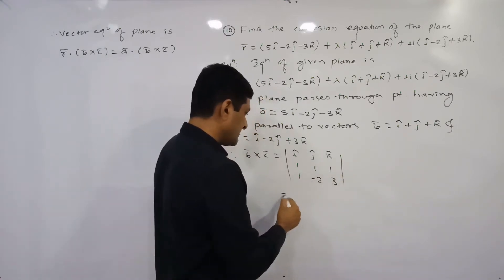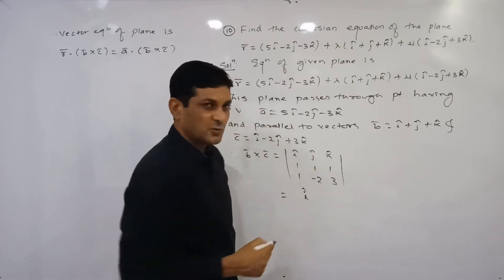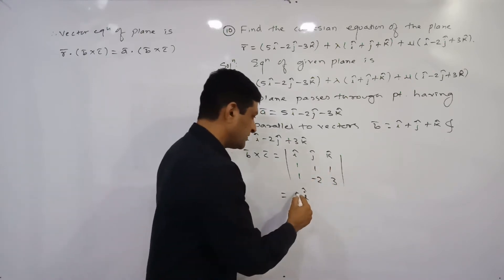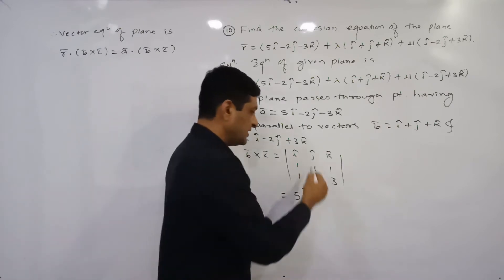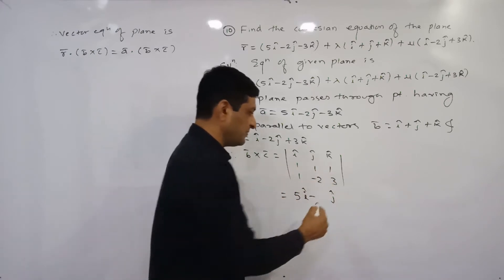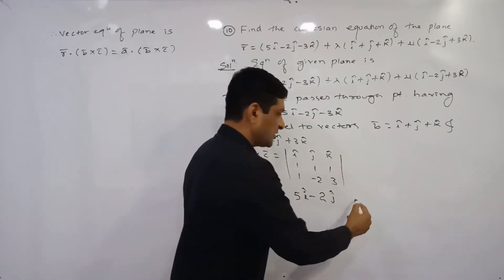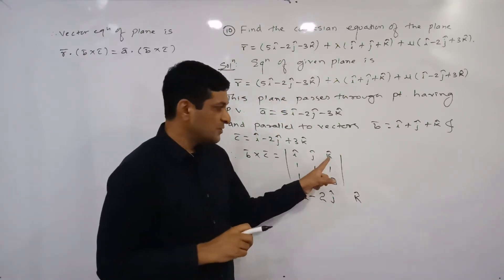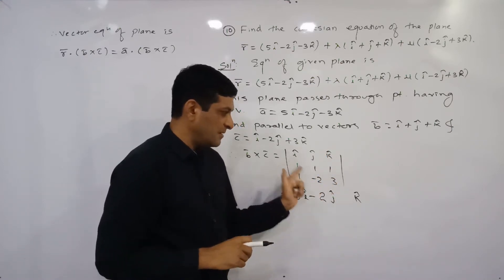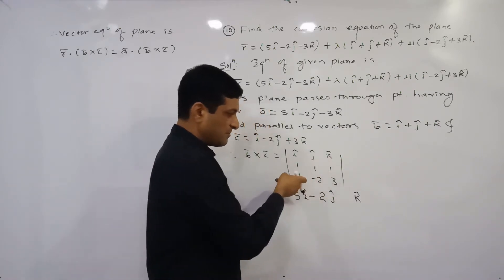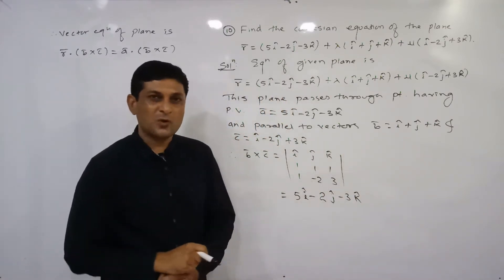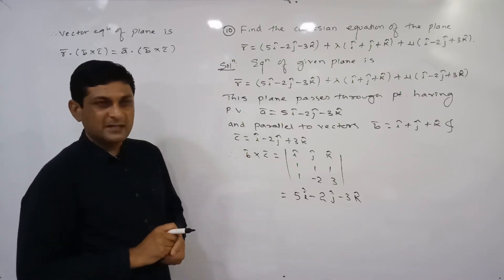Simplifying the determinant: for the î coefficient, delete the first column and get (1×3) - (1×(-2)) = 3 + 2 = 5. For the ĵ component, we take minus ĵ; deleting that column gives (1×3) - (1×1) = 3 - 1 = 2. For the k̂ coefficient, deleting that column gives (1×(-2)) - (1×1) = -2 - 1 = -3. Therefore b̄ × c̄ = 5î - 2ĵ - 3k̂.